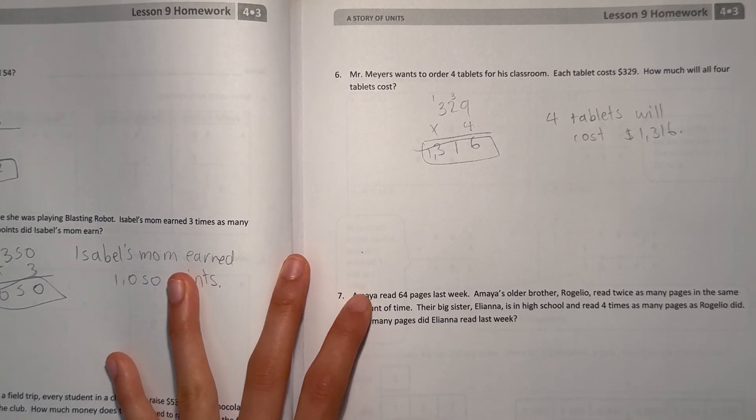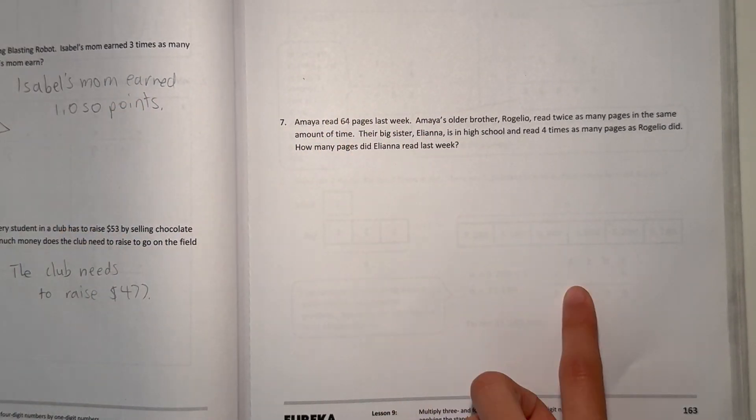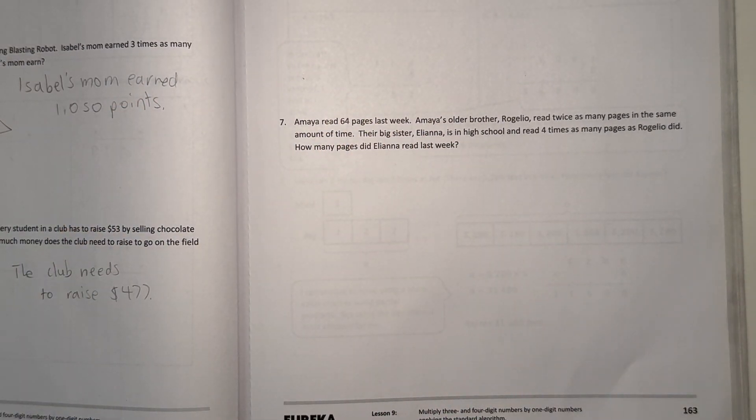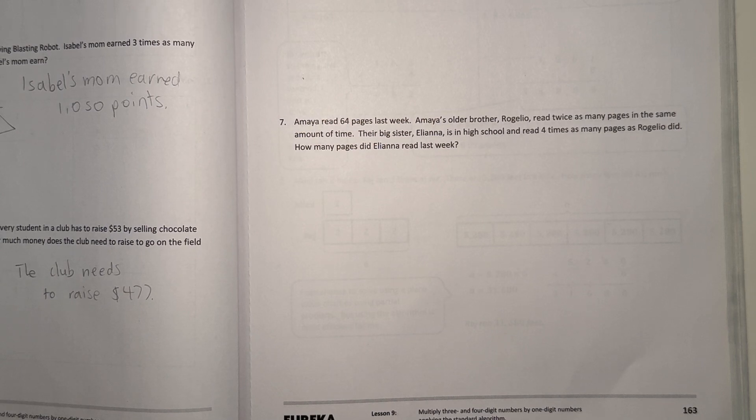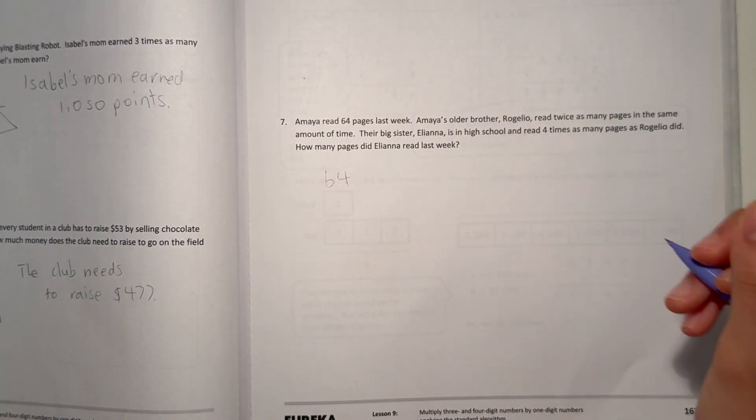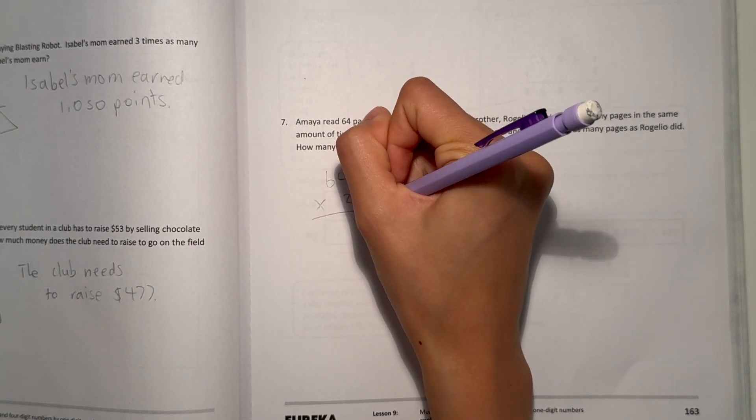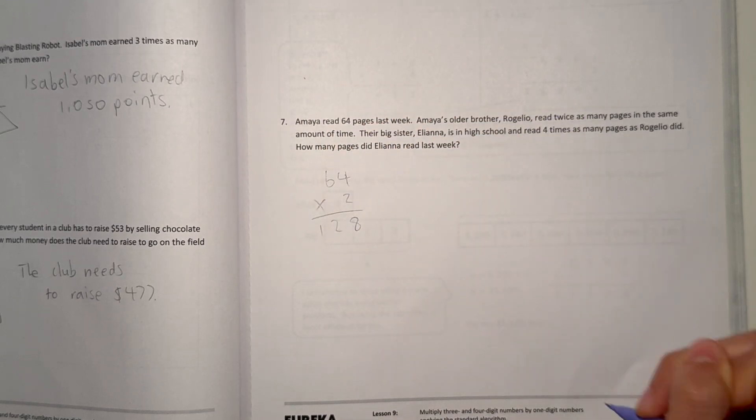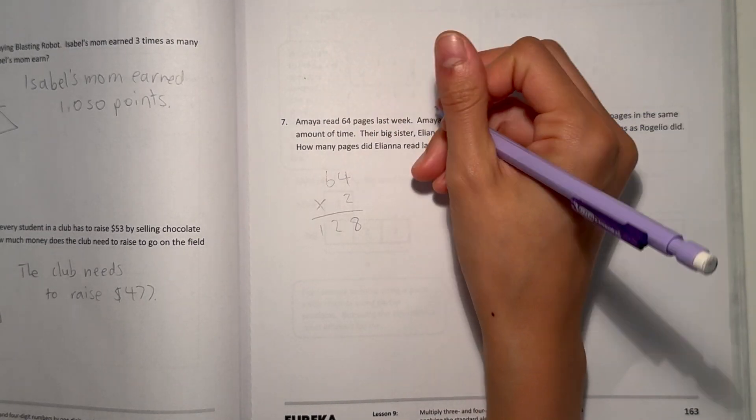Number 7, Amaya read 64 pages last week. Amaya's older brother, Rogelio, read twice as many pages in the same amount of time. Their big sister, Eliana, is in high school and read 4 times as many pages as Rogelio did. How many pages did Eliana read last week? So, Amaya read 64. Her older brother read twice as many. So, times 2. 4 times 2 is 8. And 6 times 2 is 12.